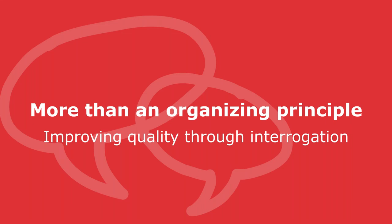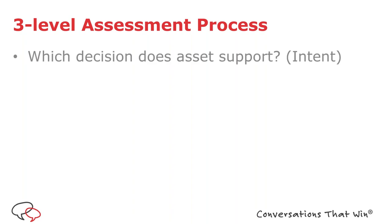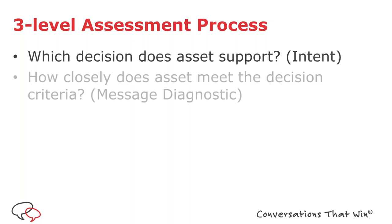Getting your content aligned and organized within an enablement system is a giant step forward. But making content accessible is just one major goal — ultimately you want your content to work. So it's not just about accessibility but ensuring the content you're creating speaks to the buyer's psychology and helps them through their deciding journey. We think about this as a three-level assessment process: first, understanding the intent of the asset; second, how closely the asset aligns to the criteria for that decision; and third, how good the content itself actually is qualitatively.